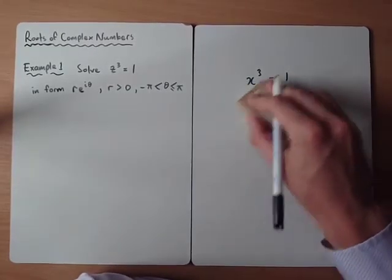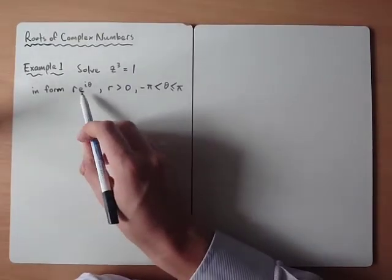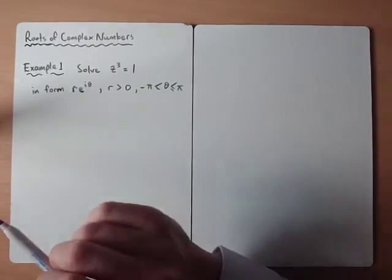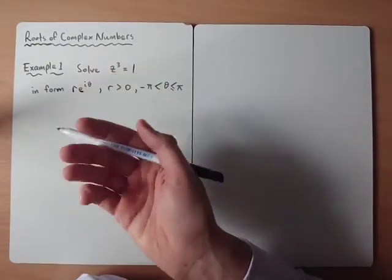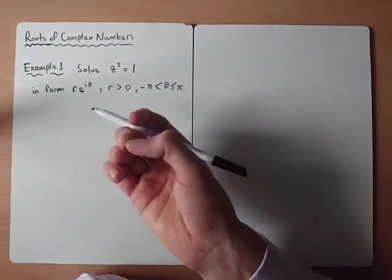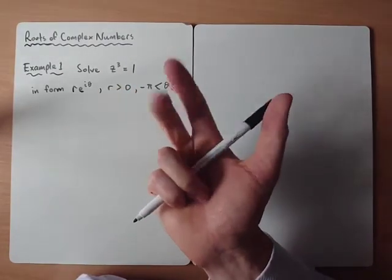But what we're able to do with complex numbers, now that we know about the exponential form of a complex number, we're able to think about, well if we take the cube root we should be expecting to get 3 solutions. Like we know a quadratic would normally have 2 solutions, a cubic would normally have 3 solutions.